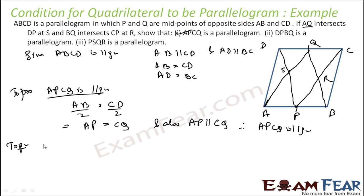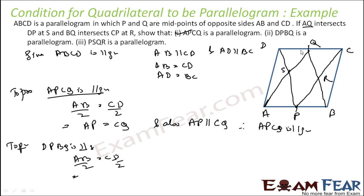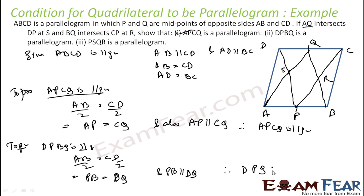Similarly, to prove DPBQ is a parallelogram: AB is equal to CD, so dividing both by two gives PB equal to DQ. Also, PB is parallel to DQ. Therefore, DPBQ is a parallelogram.